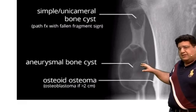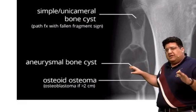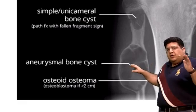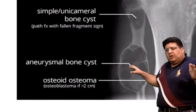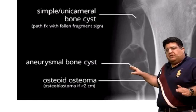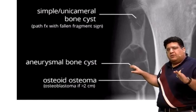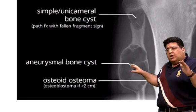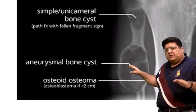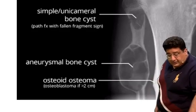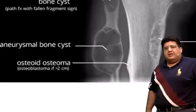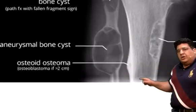Aneurysmal bone cyst is usually in the metaphysis, with proximal tibia being the most common bone. It shows multiple blood-filled sinusoids coalescing together with fibrous septum between them. Girls are more commonly affected than boys. On microscopic structure it will show giant cells — it is considered the closest giant cell variant.